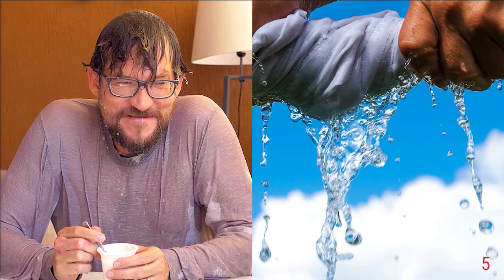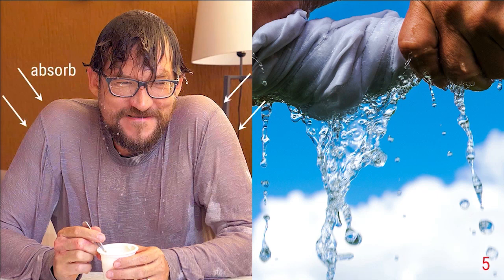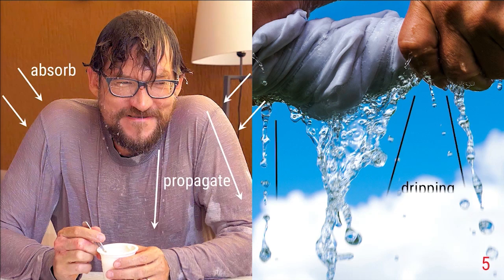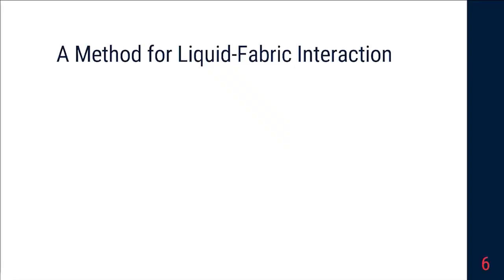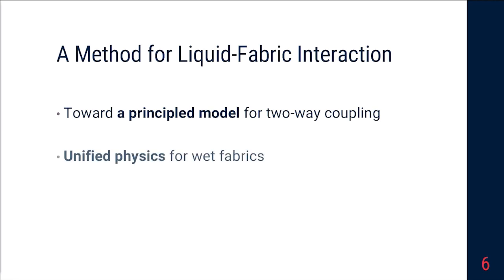Our characters should have clothes but wet clothes can have very different outlook than wet hairs. For example the liquid can get absorbed into the shape of fabric and liquid may propagate through the fabric and finally drip off from the fabric. So we need a different method to handle liquid fabric interactions. Also personally we didn't derive the physics between the liquid and solid from the first principle. This year we want to work toward a principled model for two-way coupling.